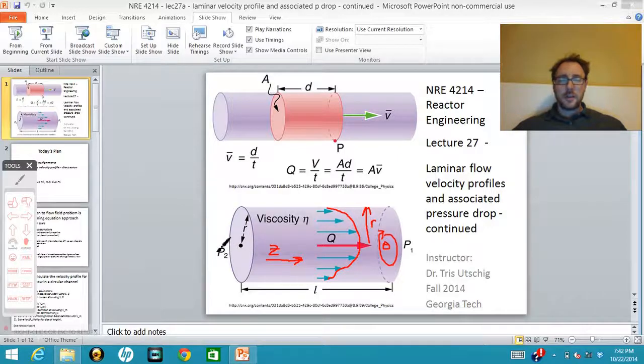The reason we want to calculate this velocity profile, which we're going to find is parabolic, is because we need it in order to calculate the pressure drop as the fluid flows along through this channel.